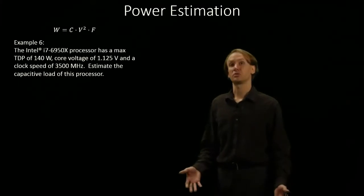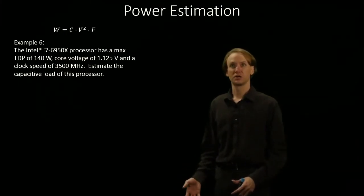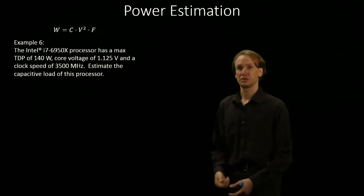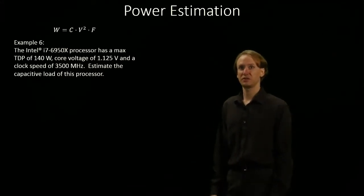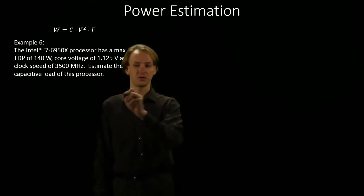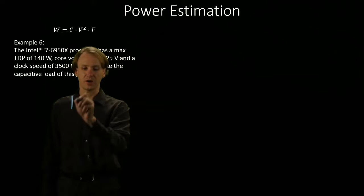So, this time we're going to look at an actual processor and its parameters. A modern Intel i7-6950 can consume up to 140 watts of power.